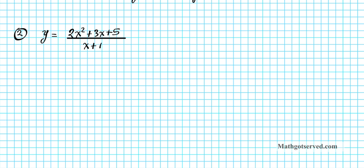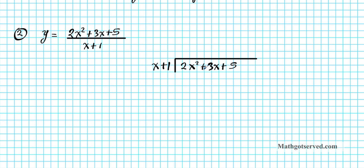In order to find the slant asymptote, we're going to use long division bars. The numerator goes under the radical sign: 2x squared plus 3x plus 5. In the denominator we have x plus 1. No need for placeholders here because we have coefficients for all the degrees.